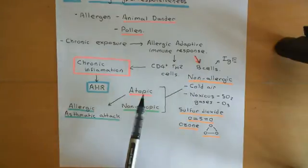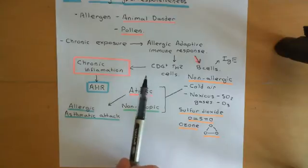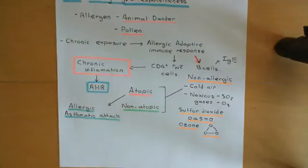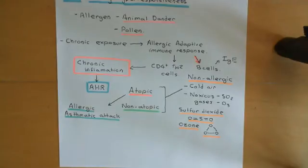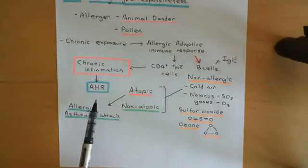Now in both atopic and non-atopic asthma, what happens is you get activation of CD4-positive T-helper 2 cells, which then invade into the bronchial wall and recruit innate immune system cells — in particular, recruit eosinophils as we'll see later. This chronic infiltration of innate immune system cells is what then triggers the airway hyper-responsiveness.